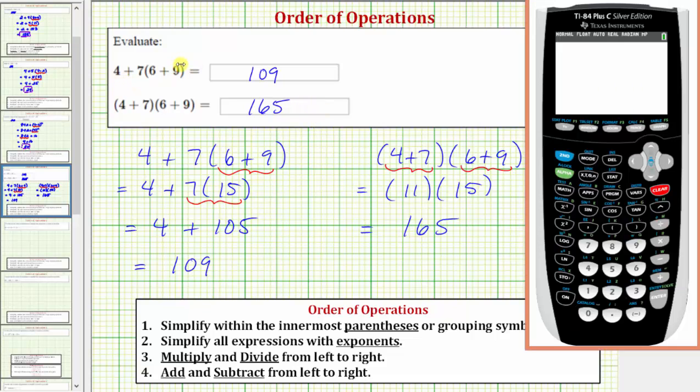So for the first expression, we have four plus seven, open parenthesis, six plus nine, close parenthesis, enter. Notice how we do get 109. And for our second expression, we have open parenthesis, four plus seven, close parenthesis, open parenthesis, six plus nine, close parenthesis, and enter. Notice how we do get 165. I hope you found this helpful.